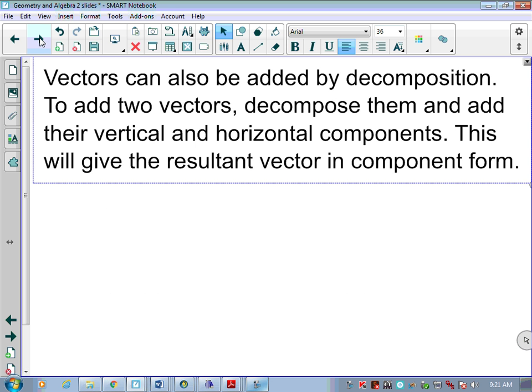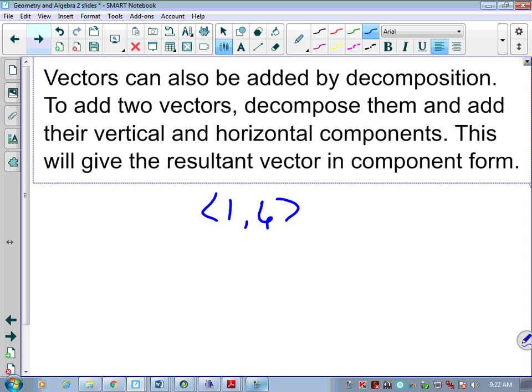The angle of a vector is always given counterclockwise from the positive x-axis. So we'll run into that later as we look at some questions. Vectors can also be added by decomposition. To add two vectors, decompose them, and add their vertical and horizontal components. This will give the resultant vector in component form. Somebody give me two single-digit numbers. One. We've got one. What else? Six. So let's say we had a vector that looked like that. That means that it went to the right one and went up six. That's how we would draw that line or that ray.